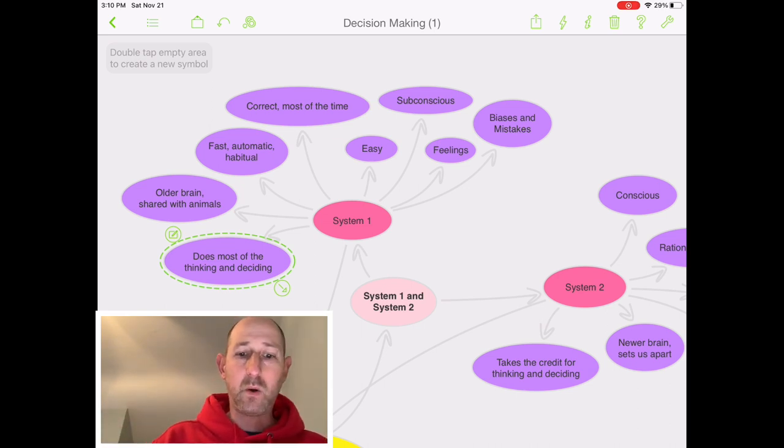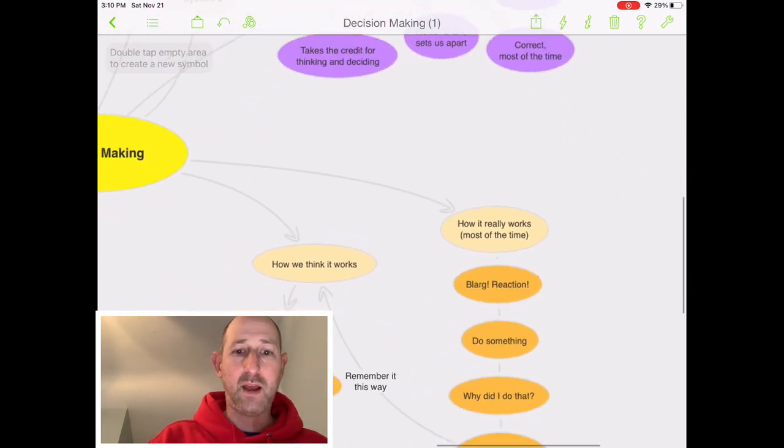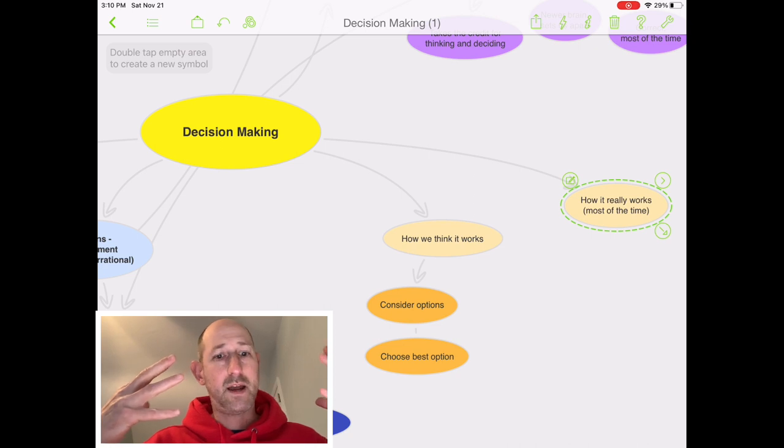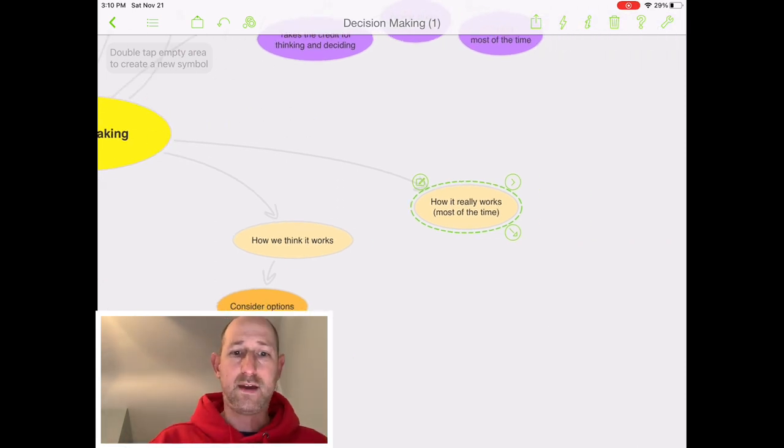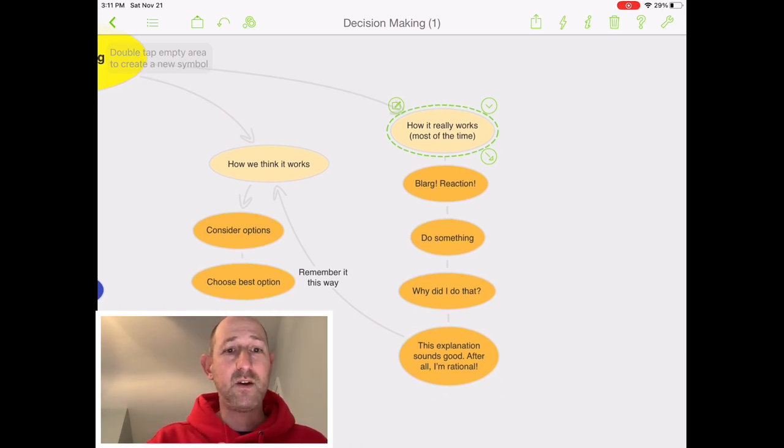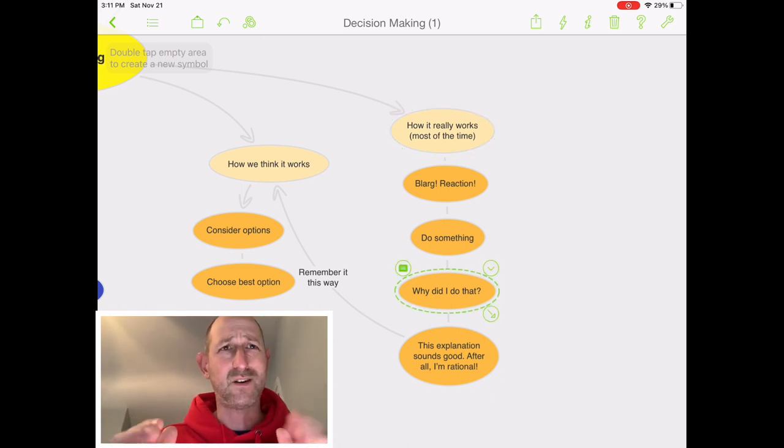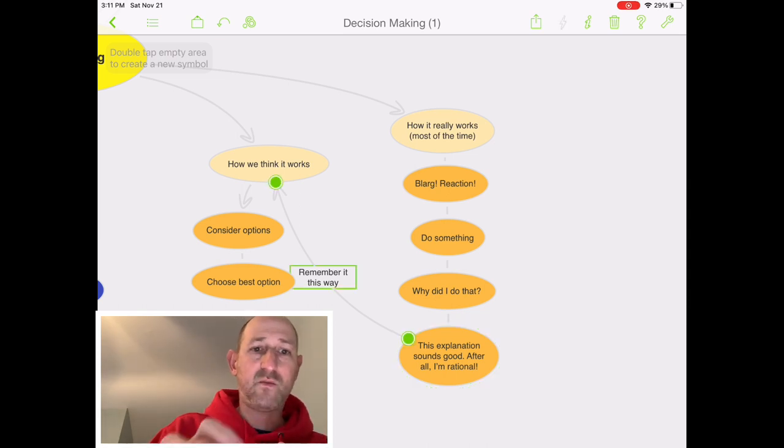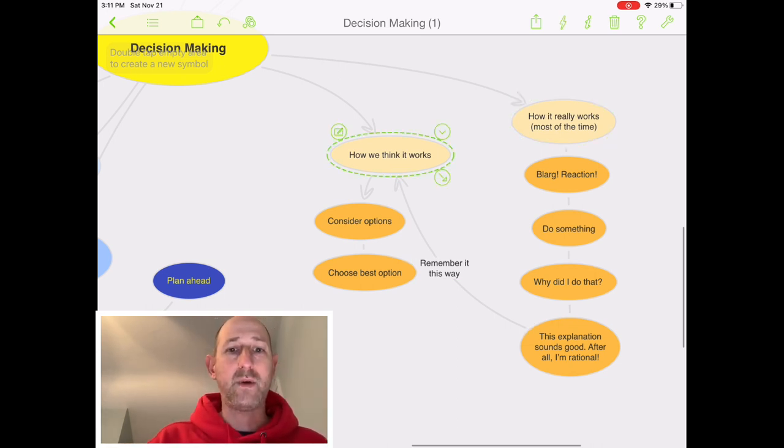And so when we look at it down here, when we look at decision making, here's how we think it works. How we think it works is we get in some stimuli, we consider our options, and we choose the best option. That's how we think it works. And that's System 2 taking credit. But what really happens a lot of the time is some kind of thing happens. We have some reaction. We do something. System 1 probably predisposes us to do it. And then after we've done it, subconsciously or consciously, we try and figure out an explanation. Why did I do that? Oh, this explanation sounds good. I'll come up with a justification, a rationalization, a defense that explains why I've done it. And even more to the case, I'll remember that the whole thing happened this way, how we think it works, even though it really probably happened this way.